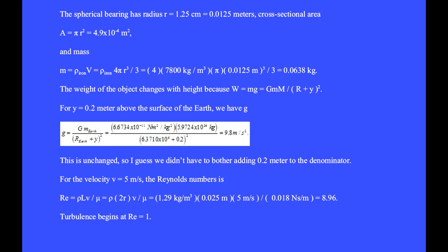The weight of the object changes with height because W equals mg equals big G m times the mass of the earth divided by the square of the radius of the earth and the height y. For y equals 0.2 meters above the surface of the earth, we have g equals 9.8 meters per second squared. This is unchanged, so I guess we didn't have to bother adding 0.2 meters to the denominator.